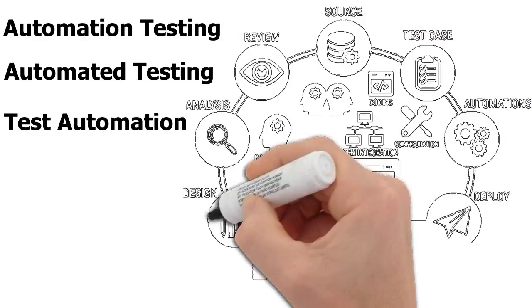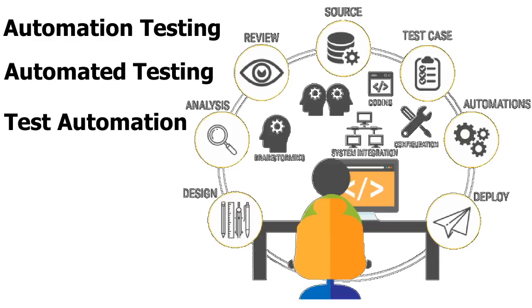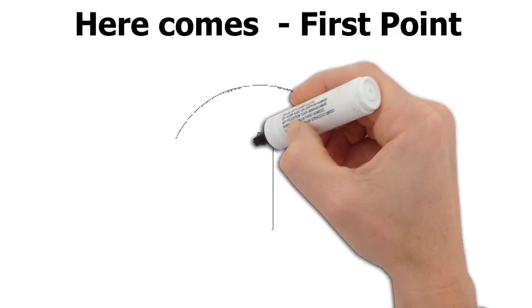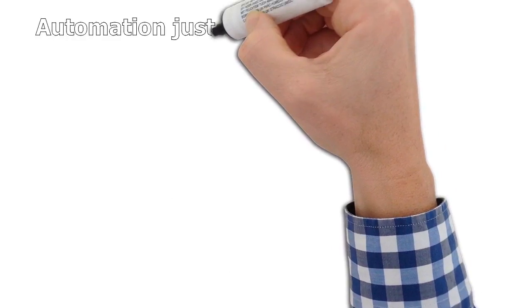In automation testing, the whole scenario involves designing test cases, analysis, reviewing source code, developing source code, preparing test cases, plugging in automation based on all these processes, deploying those test cases, doing integration with the system, brainstorming where something went wrong, updating the code, and configuring it — so that whatever was done manually and was taking more time can now be done in less time using automation.